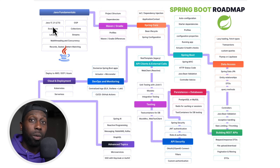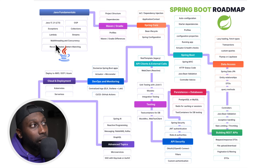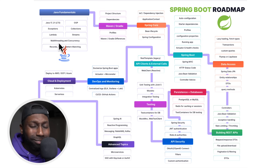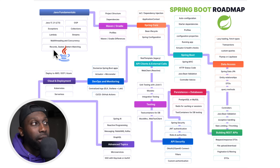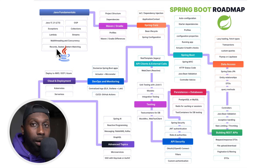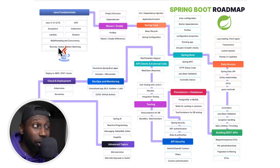You need to know about OOP, exceptions, collections, lambda streams, and multi-threading and concurrency. You don't need to know these in depth as before, but you still need to be aware of what they are and how you can improve your application if needed. And then we have records, sealed classes, and pattern matching — these are some of the advanced features which are good to know.